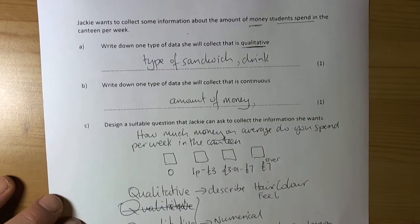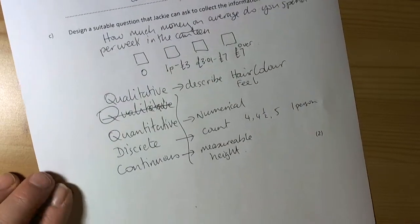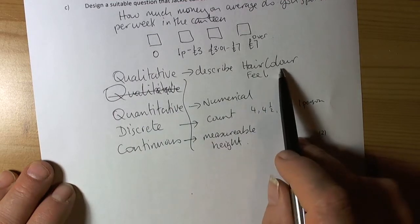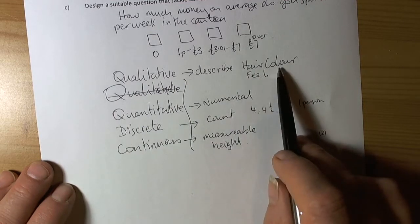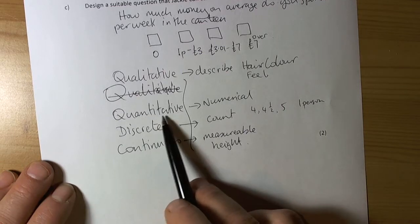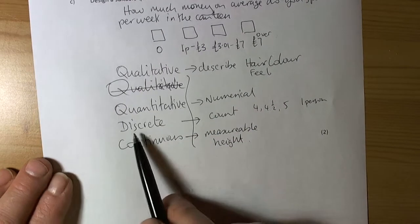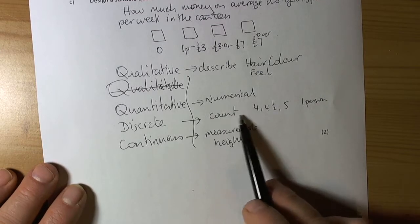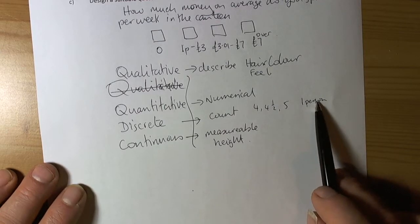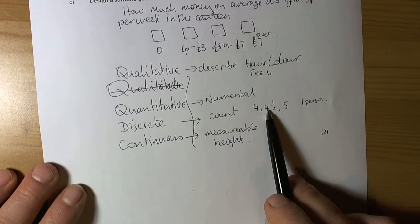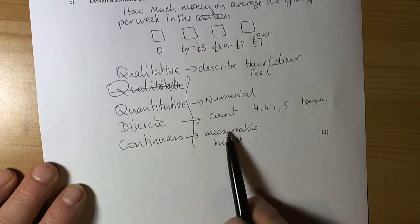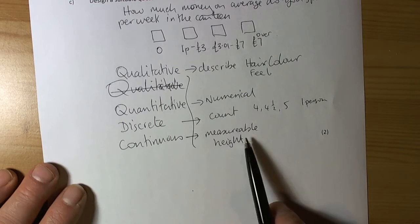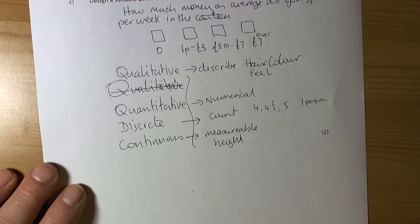So data types and questionnaire design. Remember, qualitative is descriptive data, things you can't put a number to. Quantitative is things you give numbers to. Discrete is things that have only certain values available, things you count. Continuous includes height, weight, mass, all those kind of things.